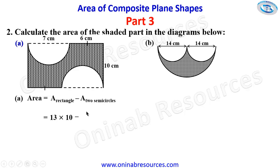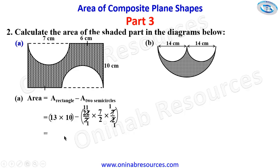So we have (13 + 10) times the breadth, minus pi r squared = 22/7 times 7/2 times 7/2. The 7 here is the diameter of the semicircle, and dividing by 2 gives the radius. Simplifying: 7 cancels and 2 into 22 gives 11, so we get 130 minus 38.5 (since 11 times 7 = 77, divided by 2 = 38.5). Carrying out the subtraction gives 91.5 square centimeters, the area of the shaded part in shape 2A.